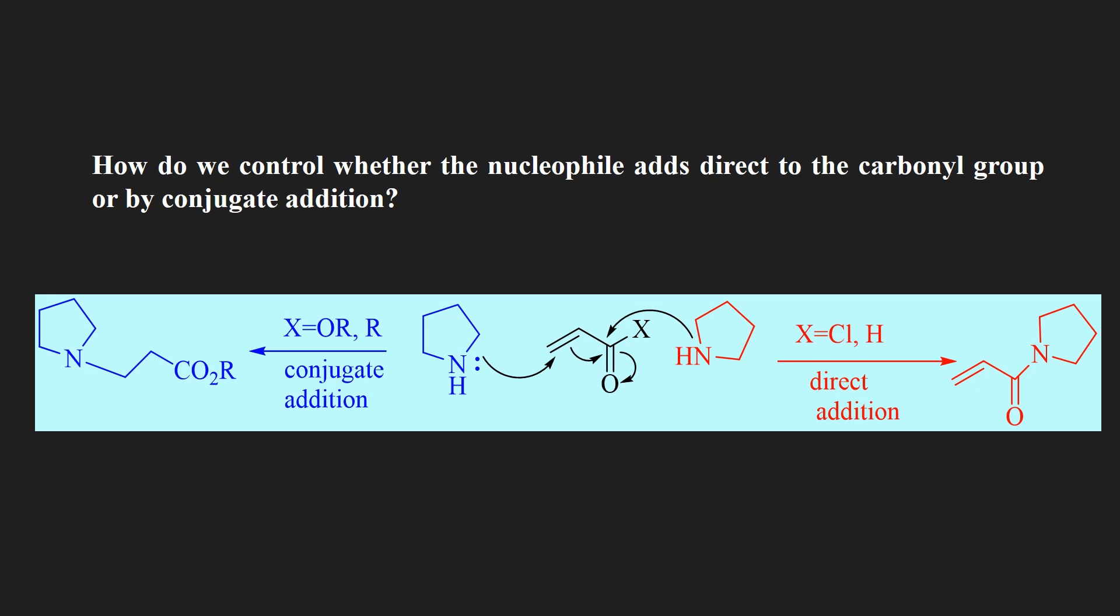How do we control whether the nucleophile adds directly to the carbonyl group or by conjugate addition? Very electrophilic compounds such as acid chlorides or aldehydes tend to prefer direct addition, while the less electrophilic compounds such as esters or ketones tend to do conjugate addition. If X is OR or RR (ester or ketone), the result is conjugate addition. And if X is halide or hydrogen, then there is direct addition.